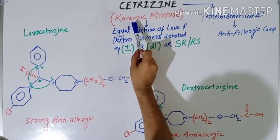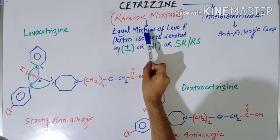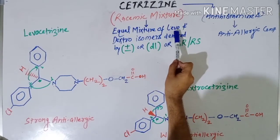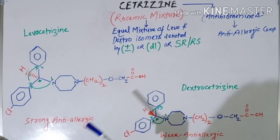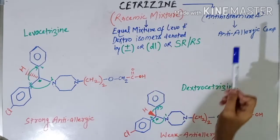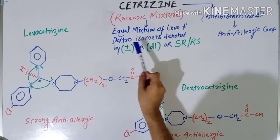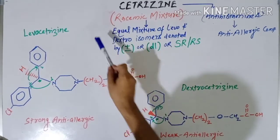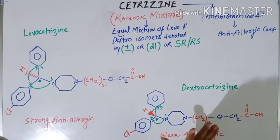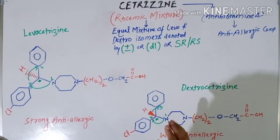Cetirizine is nothing but a racemic mixture. A racemic mixture is an equal mixture of levo and dextro isomers. Levo isomers are those which rotate the plane of polarized light towards the left direction, and dextro isomers are those which rotate the plane of polarized light towards the right direction.